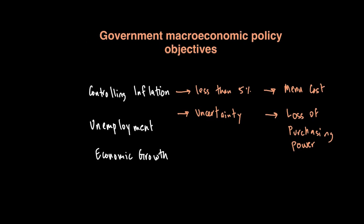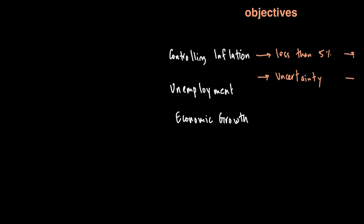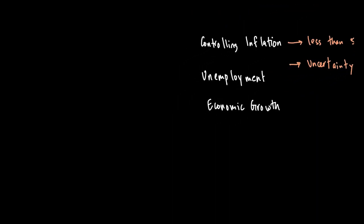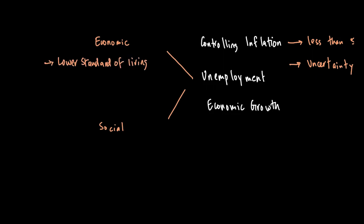When it comes to unemployment, keeping unemployment as low as possible is a very important macroeconomic goal because it has its own economic and social effects. If there is high unemployment, there will be a lower standard of living, which can result in loss of income and therefore unhappiness and lower welfare in the economy. When it comes to unemployment, we are not using our resources fully and efficiently, so we will not be on the PPC but below it.